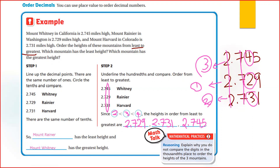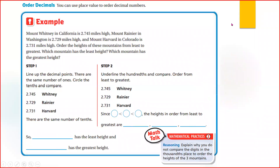Then after 2, we have 3. The one with 3 will be the second. And which is the greatest? 4. So the one with 4 would be the greatest. That's it. Now next.